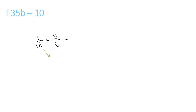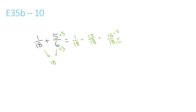18 and 6 both go into 18. We just keep the 1 over 18 the same because it's already over 18. Plus 6 times 3 is 18, so we times the top by 3 to get 15 over 18. Now we add the top numbers, 16 over 18. And the top and bottom can both be divided by 2, that ends us up with 8 over 9.